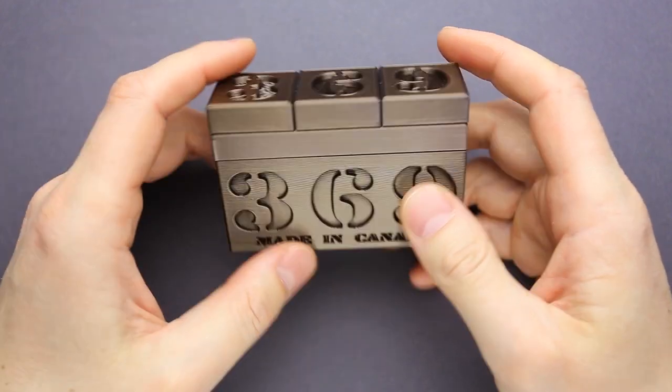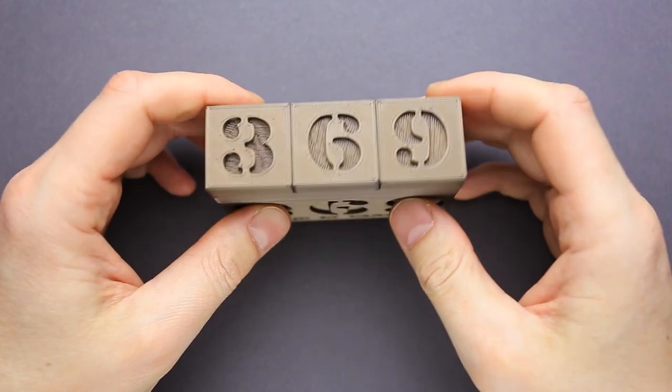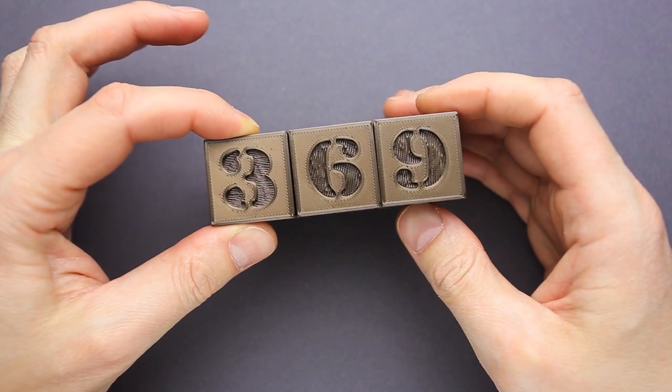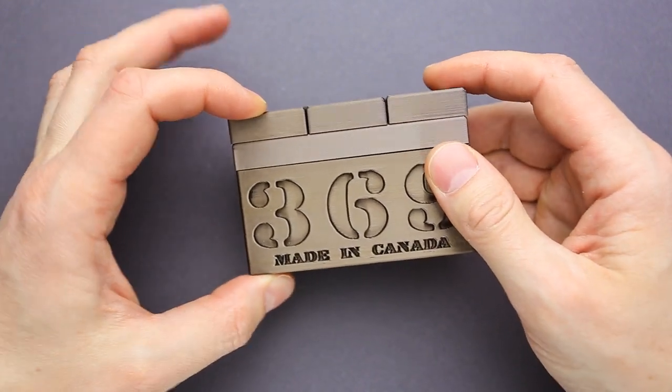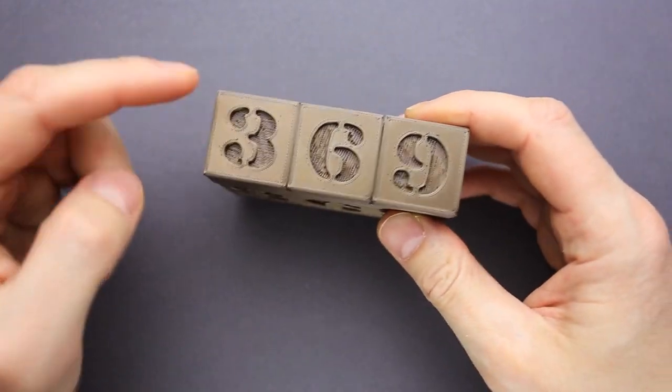Hey there! I found a new interesting puzzle to show you today. It is called 369. The name comes from the size of the puzzle. It is 3 centimeters wide, 6 centimeters tall and 9 centimeters long. So 369.